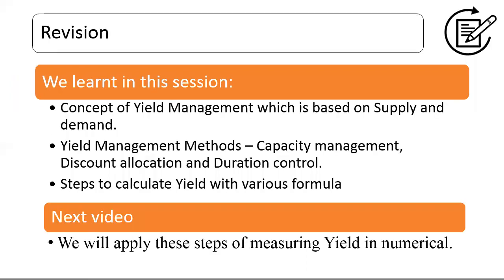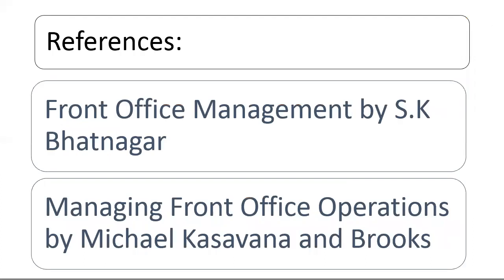Let's recap. We learned in this session: the concept of yield management, which is based on supply and demand; yield management methods — capacity management, discount allocation and duration control; and we also learned to calculate yield with various formulas. In the next video we will apply these steps of measuring yield in numerical form. I have referred certain books which you may also refer.